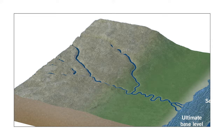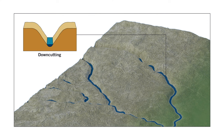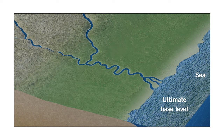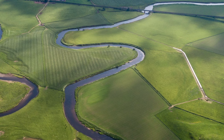When the elevation of a river is much higher than ultimate base level, the river tends to downcut or carve into the landscape. However, when rivers are close to base level, they tend to meander back and forth, using their energy for lateral movement instead of downcutting.